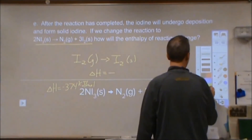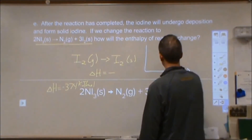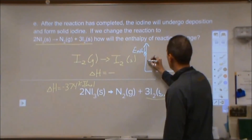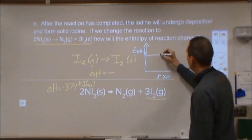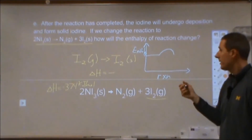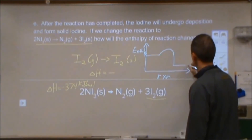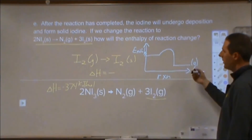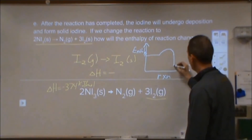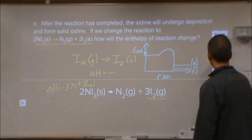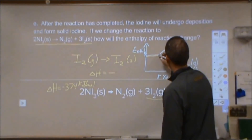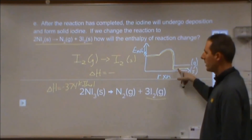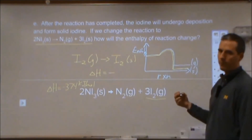Alternatively, we can look at this on a reaction energy diagram. Starting with our reactants, there's a very small activation energy — this is a highly sensitive reaction — followed by a very exothermic drop. That endpoint assumes gaseous iodine. Going to the solid state means the products drop even further in energy. So we would see a greater enthalpy change, expecting a value more negative than negative 374 kJ.